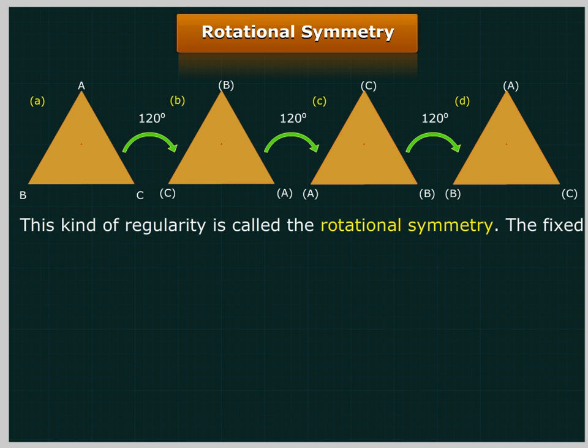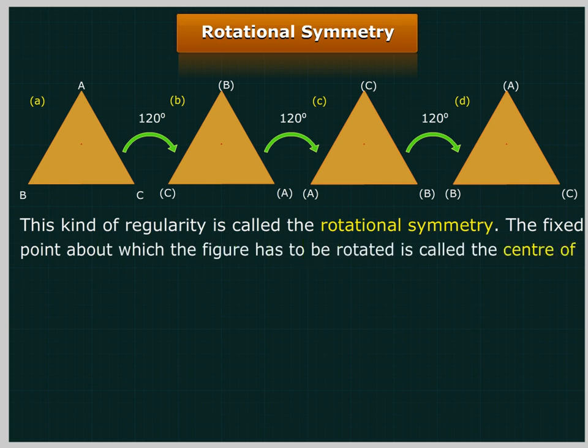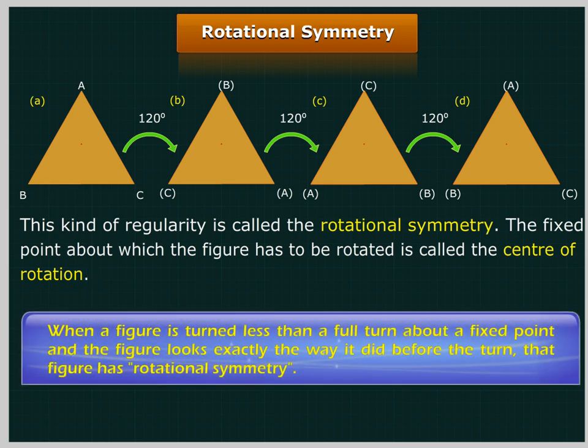This kind of regularity is called the rotational symmetry. The fixed point about which the figure has to be rotated is called the center of rotation. When a figure is turned less than a full turn about a fixed point, and the figure looks exactly the way it did before the turn, that figure has rotational symmetry.